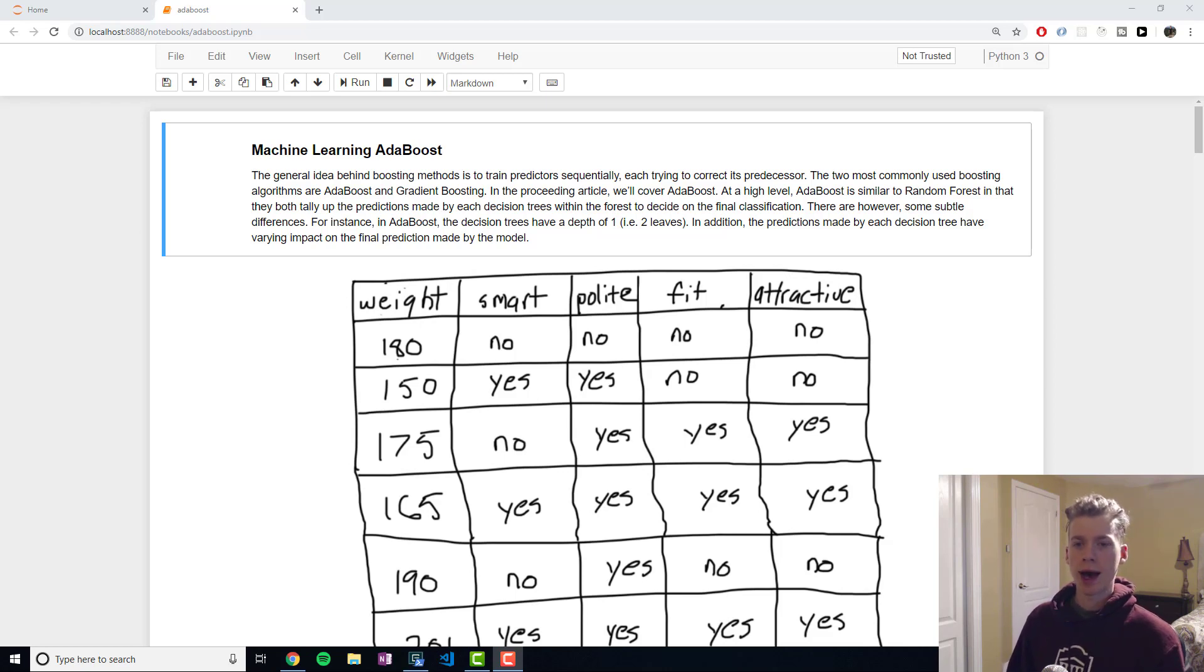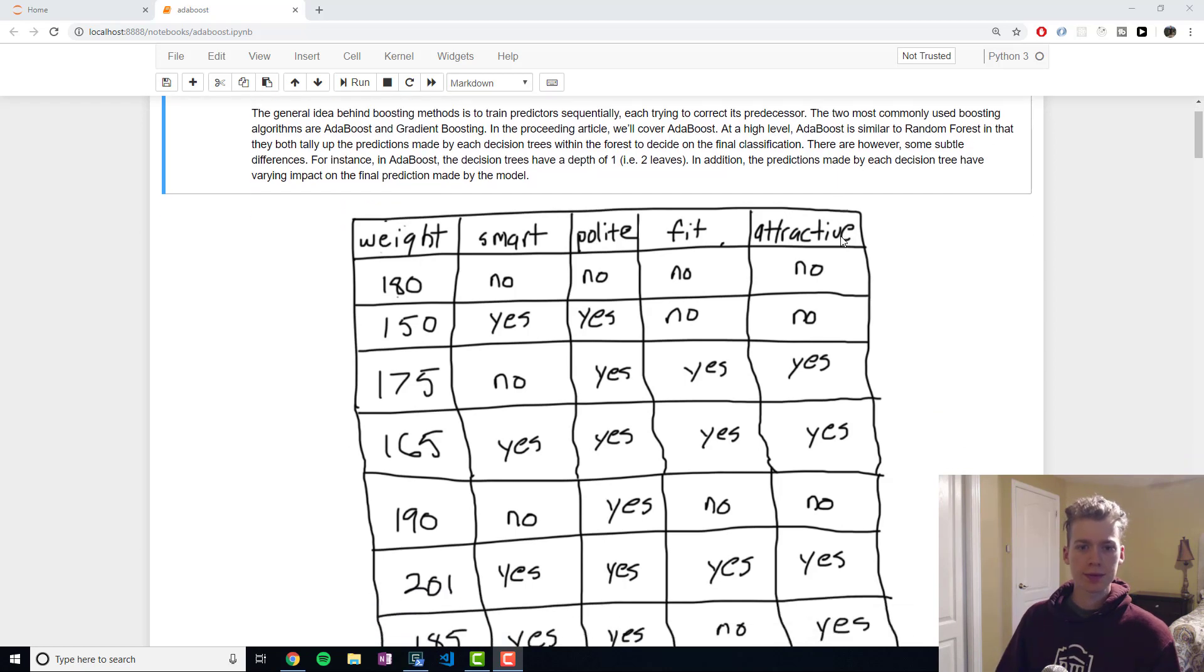AdaBoost is similar to random forest in that they both tally up the predictions in the end. However, for AdaBoost, the trees will typically be a single node with two leaves. Another important fact is when you do the final tally in the context of AdaBoost, the different decision trees will have a varying impact on the final answer, whereas for random forest they're completely independent.